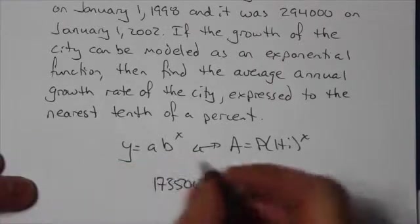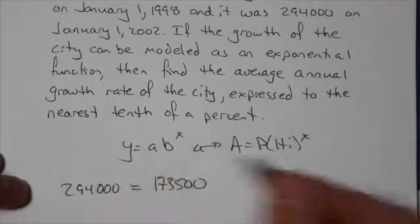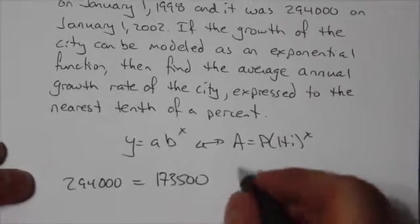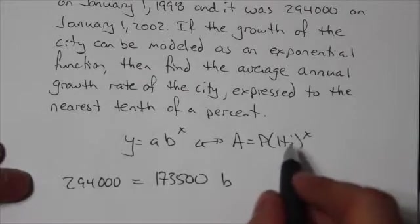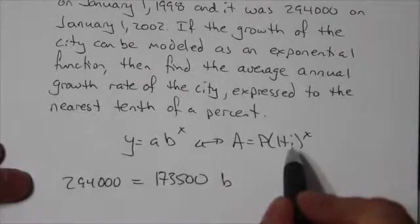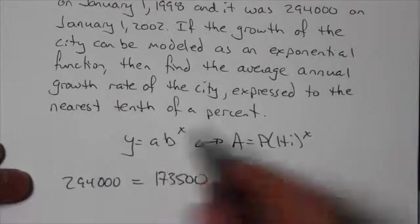The A or the y would correspond to the final amount, so 294,000. Now what we don't know is the base. We don't know what that multiplication factor is. If we treat it like this, then I don't know what the interest is or the percentage growth here, but in this case I just don't know what the base is.